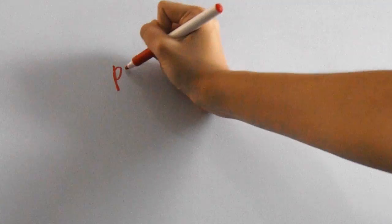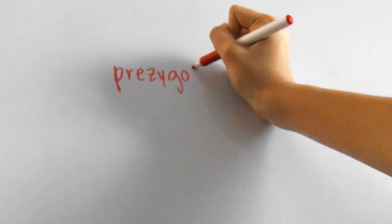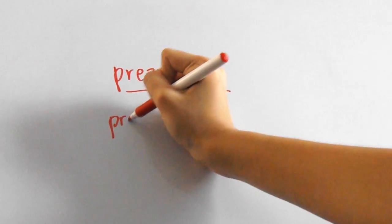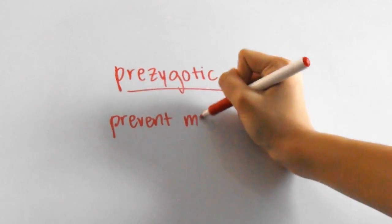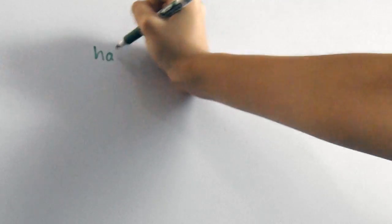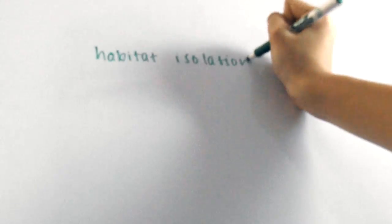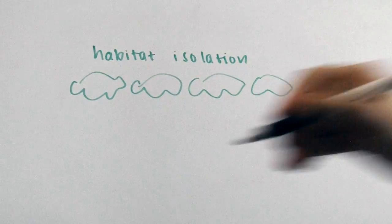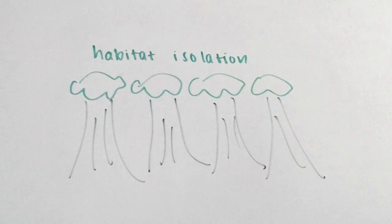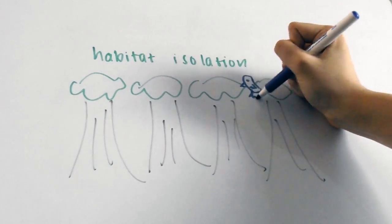So we've got the prezygotic barriers over here, meaning prezygote or before a zygote forms. Prezygotic barriers prevent successful mating from even occurring. One type is called habitat isolation, which is when species live in different habitats and may encounter each other rarely, if at all. If they can't get to each other, they can't mate.